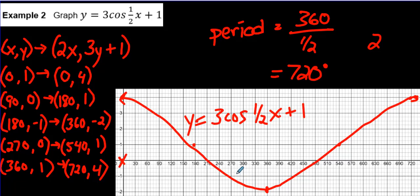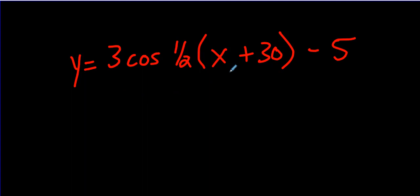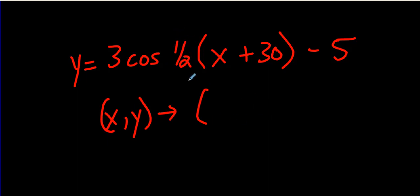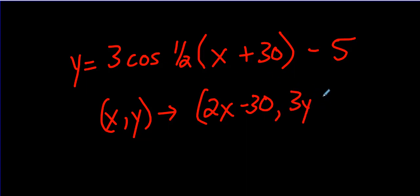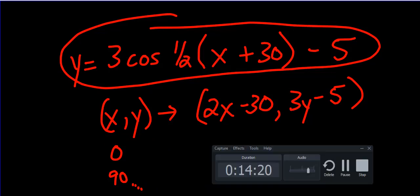If you ever get something like y = 3 cos[½(x + 30)] − 5, here's how the mapping notation would look: take the reciprocal of ½, which is 2, so the x mapping is 2x − 30. The plus 30 inside the brackets becomes minus 30 because it moves left. For the y values: 3y − 5. Then you continue on with your key points at 0, 90, and so on. Hopefully that helps. Have a great day!